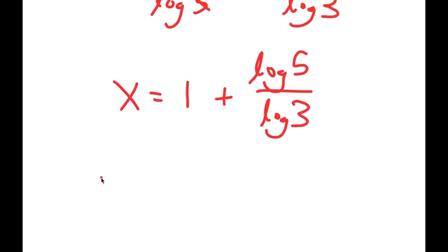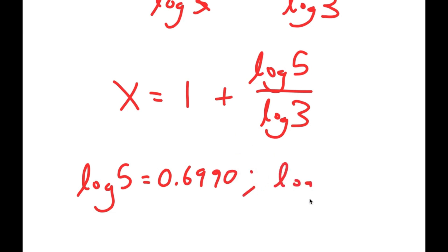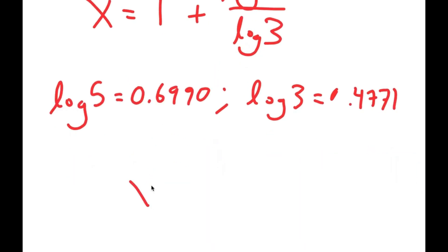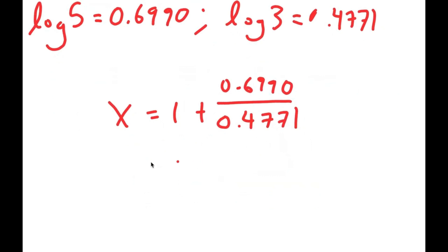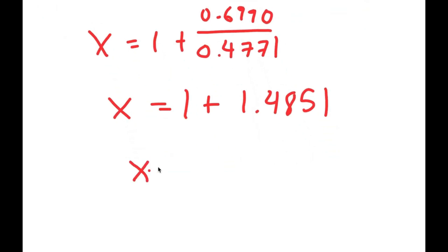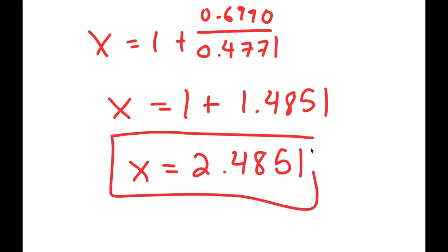Now log 5 is equal to 0.6990 and log 3 is equal to 0.4771. So this is going to equal 1 plus 0.6990 over 0.4771. Now 0.6990 over 0.4771 equals 1.4851, and 1 plus 1.4851 is equal to 2.4851. So this is my value of x.